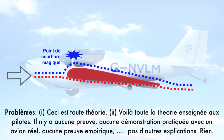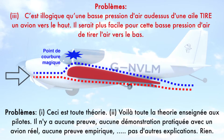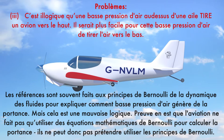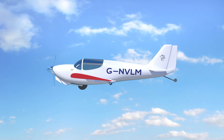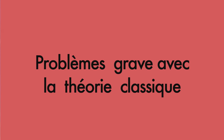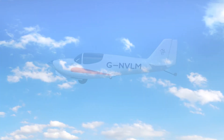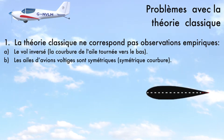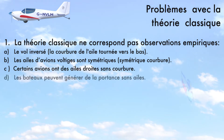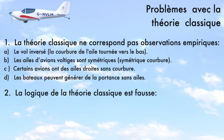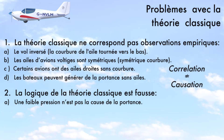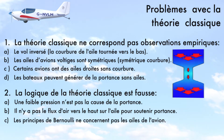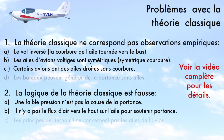There's only one problem: it's total bollocks. Aviation can't claim to use Bernoulli's principles, as it doesn't actually use any of Bernoulli's mathematical formulas or equations in the calculation of lift. It's obviously utter nonsense because it doesn't correspond to what we see in reality. Specifically, it cannot explain inverted flying, how aerobatic planes can fly with symmetrical wings, how some planes can fly with only straight wings, or how boats can generate vertical lift without wings. Also, the logic of conventional theory is false — correlation is not causation for low air pressure and lift. There is no upward airflow on the wing to support vertical lift, Bernoulli's principle doesn't apply to aircraft wings, and this theory can only describe a stall.